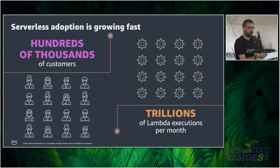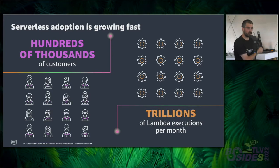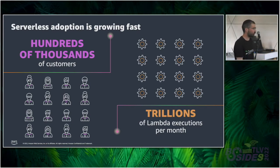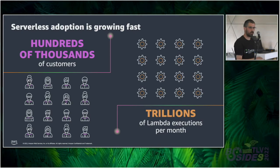This is a slide from AWS showing the scale we are talking about. AWS now has hundreds of thousands of customers using serverless applications. If you look at Lambda executions every month, you have trillions of them. So it is already a major player in software architecture, and it is only the beginning.